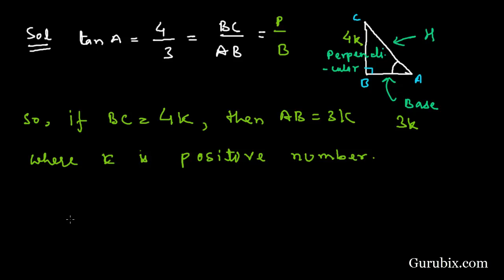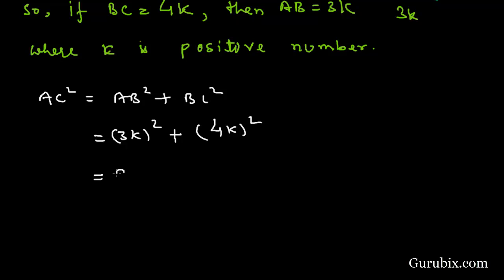Now we shall apply the Pythagoras theorem to find the value of AC. AC squared equals AB squared plus BC squared. This means 9K squared plus 16K squared equals 25K squared. So AC squared is 25K squared. Therefore AC equals 5K.